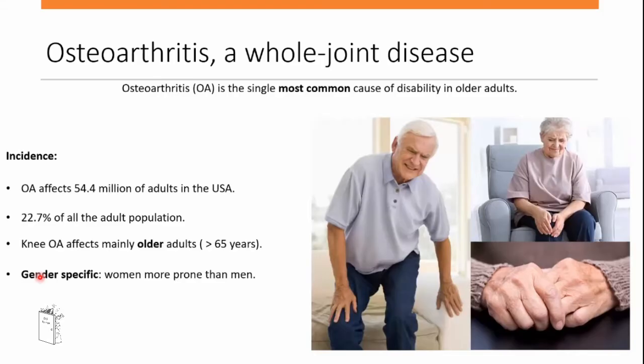I'd like to give you a little background regarding the disease, because organ-on-chip devices are developed for two main aspects: drug screening purposes, and to recapitulate characteristics of specific diseases. In my case, I'm focusing on the development of a new organ-on-chip paradigm — a cartilage-on-chip — to study osteoarthritis.